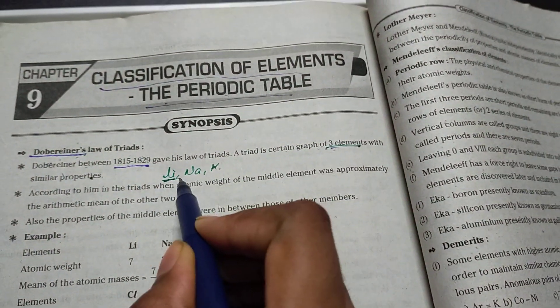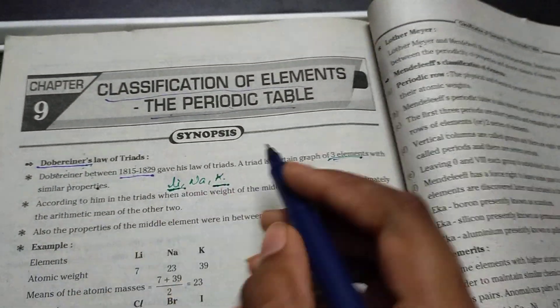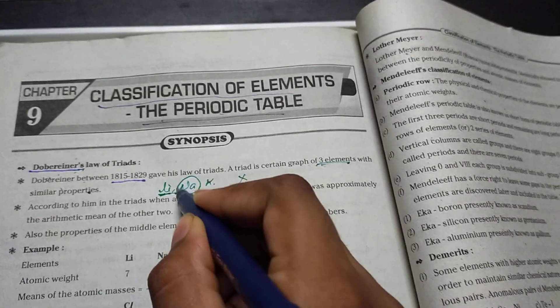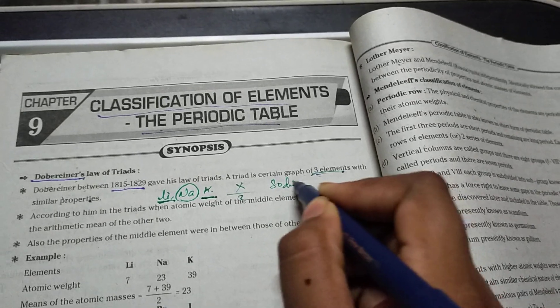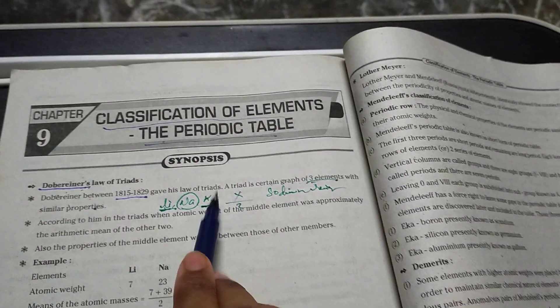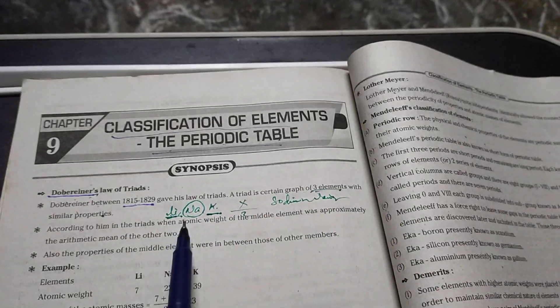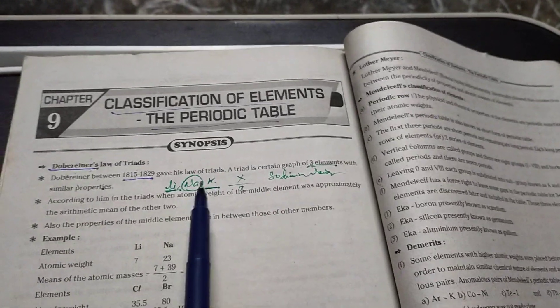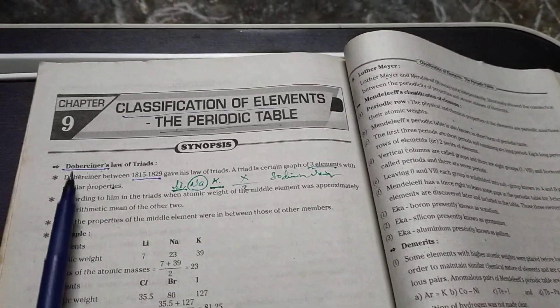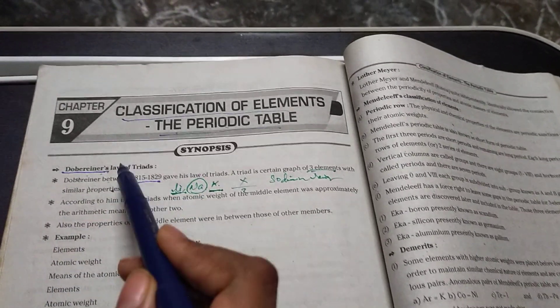It means this weight and this weight, when you add them and divide by two, you can get the sodium weight. The arithmetic mean of these both masses gives us the middle one's mass. In this way, Dobereiner explained the law of triads.